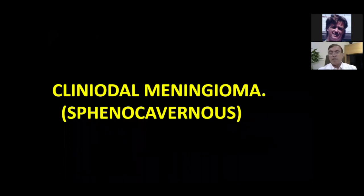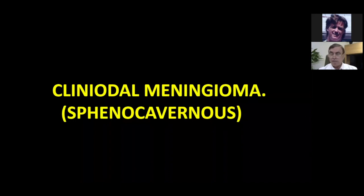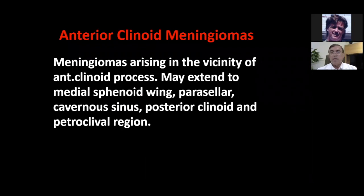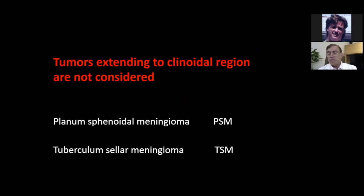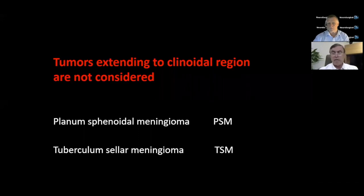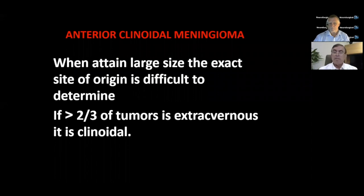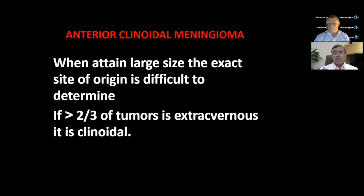Let's discuss the clinoid meningiomas, sometimes described as sphenocavernous meningiomas. By definition, anterior clinoid meningiomas arise from the vicinity of the anterior clinoid process, but may extend medially, laterally, or anterosuperiorly. We should exclude meningiomas coming from other areas like planum sphenoidale or tuberculum sellae. Remember, if a clinoidal meningioma grows to a larger size, the exact origin is difficult to determine. People solve that problem by saying: if more than two-thirds of the tumor is extra-cavernous, it is most likely clinoidal.